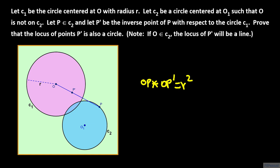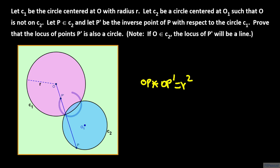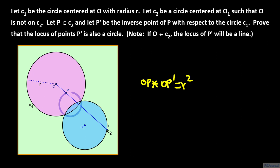We also require that P prime be on the segment OP. Observe that as P travels around the circle C sub 2, its inverse P prime seems to trace another circle. In this lecture, we will show that the locus of the inverse points of the points on C sub 2 is indeed another circle.